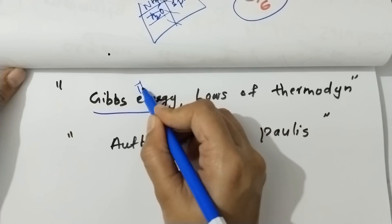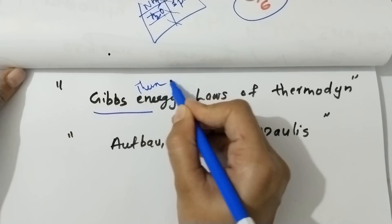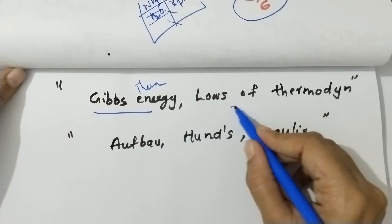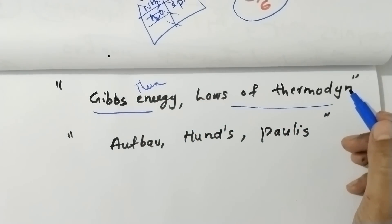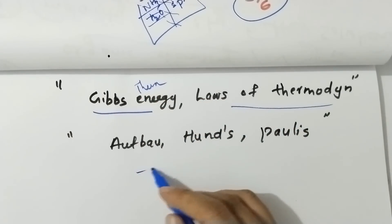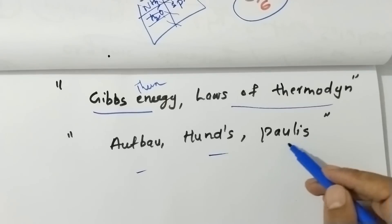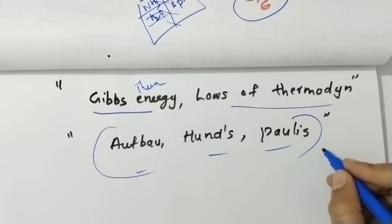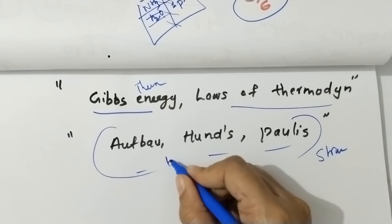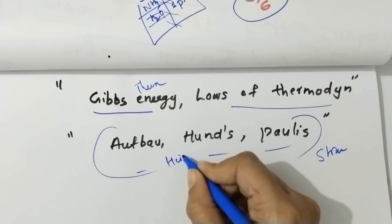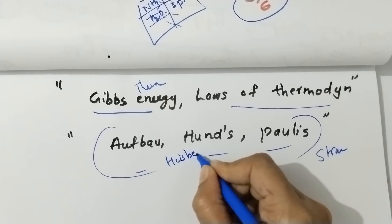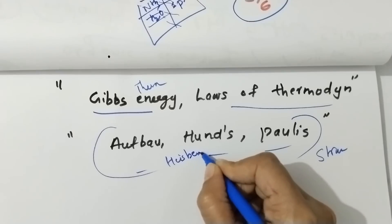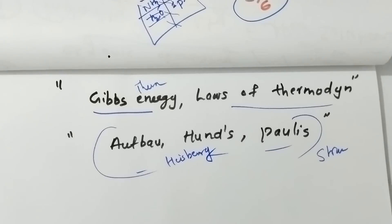Additionally, Thermodynamics and the laws of Thermodynamics. Then the Aufbau Principle, Hund's Rule, and Pauli's Exclusion Principle — this is the structure of that topic. I have asked the question about Heisenberg. People have asked these questions.